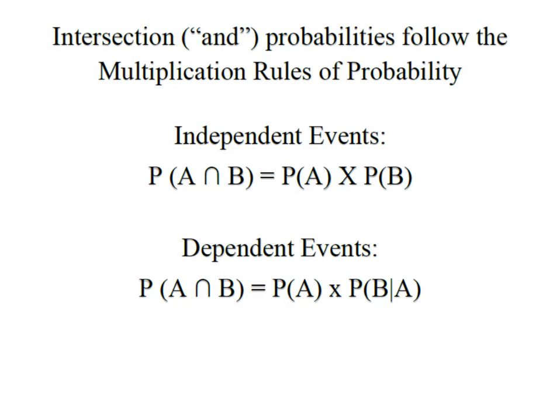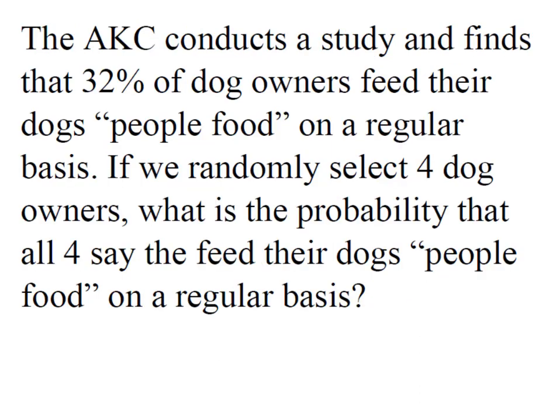In this case we're going to look at independent events where the probability of A and B, or A intersection B, is simply the probability of A times the probability of B. The AKC conducts a study and finds that 32% of dog owners feed their dogs people food on a regular basis. If we randomly select four dog owners, what's the probability that all four say they feed their dogs people food on a regular basis?